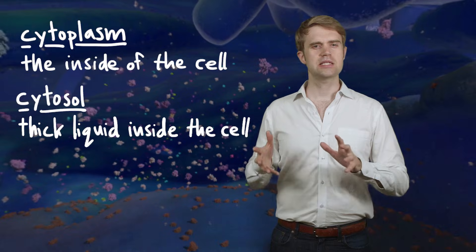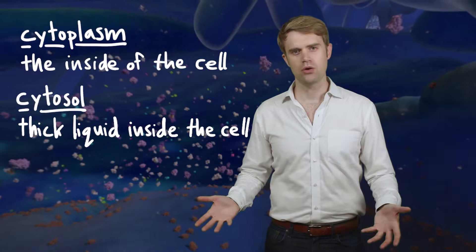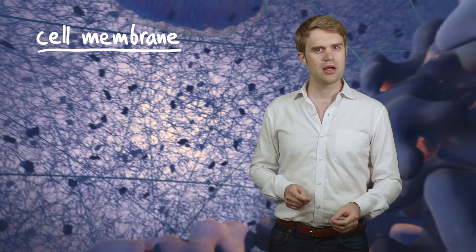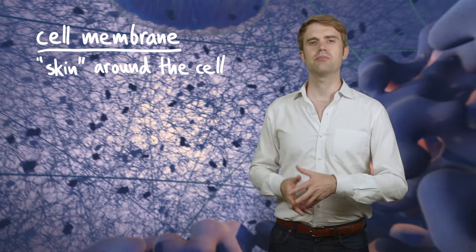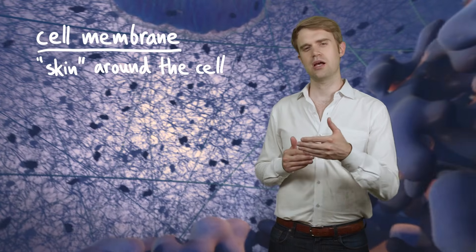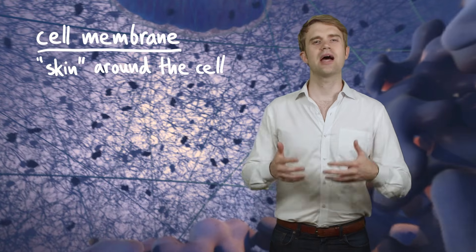What prevents the insides of the cell from just spilling out? Well, the cell is surrounded by something that's sort of like a flexible skin. It's called the cell membrane, and you can kind of see it in some places. It keeps the insides of the cell in and the outside out.